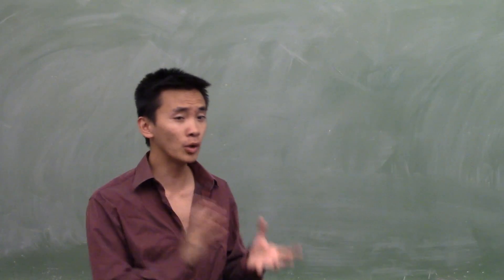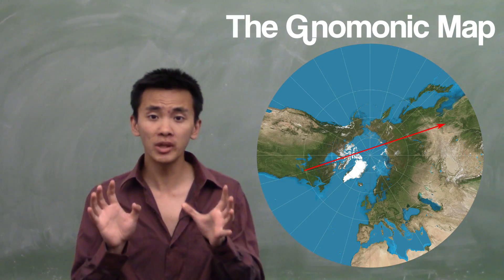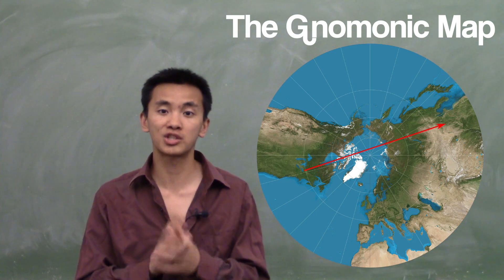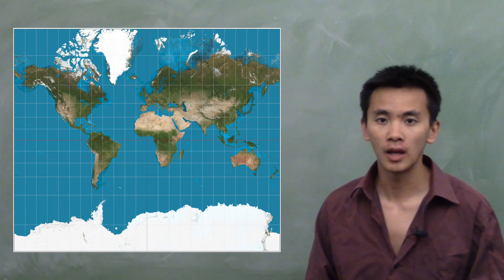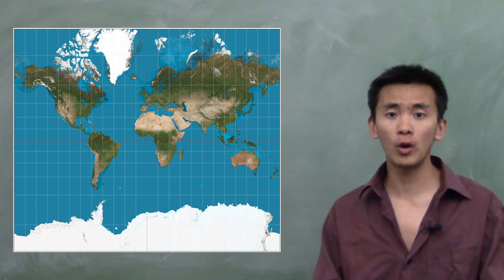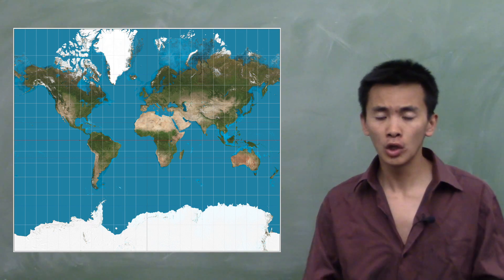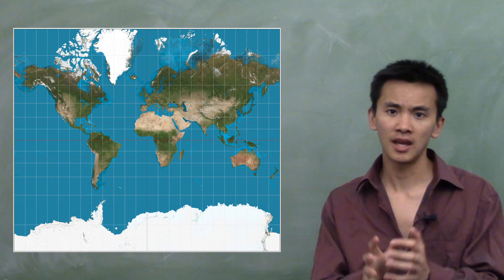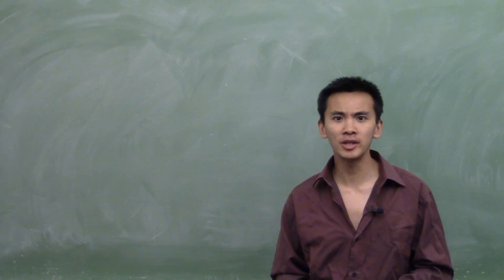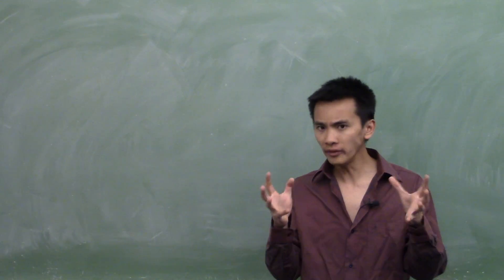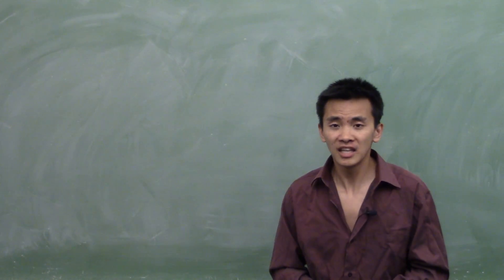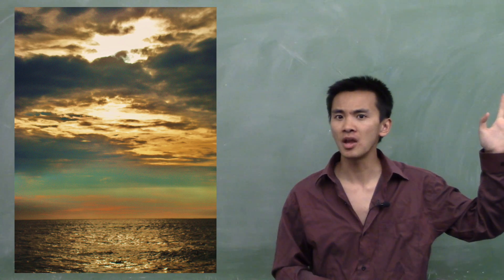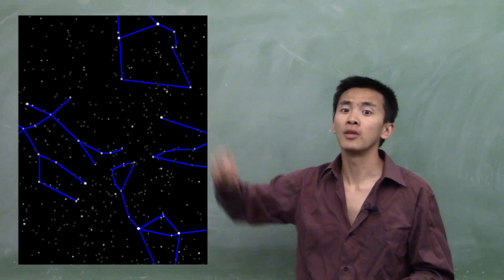So why do we use the Mercator map? I mean, there are maps out there — like the Gnomonic Projection — in which all shortest paths are straight lines. Well, the Mercator map was created in the 16th century at a time when people were traveling around the world using ships. And when you're on a ship in the middle of the ocean, the only things you can use to know where you are and in which direction you're going are basically the direction of the sun, the direction of the stars, and compasses.